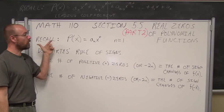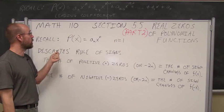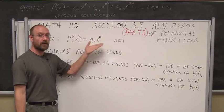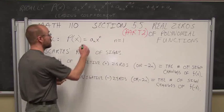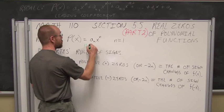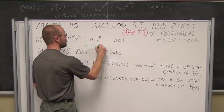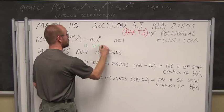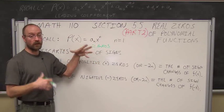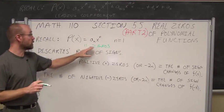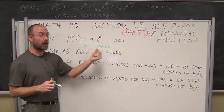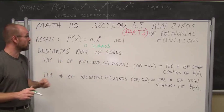Let's recall what we discussed in section 5.1. If we have a polynomial of degree n, that means there are n possible zeros. Now these may be real or they may be imaginary. We're going to stick with the real ones, because that's what this section deals with. We'll deal with imaginary or complex solutions when we get to the next section.